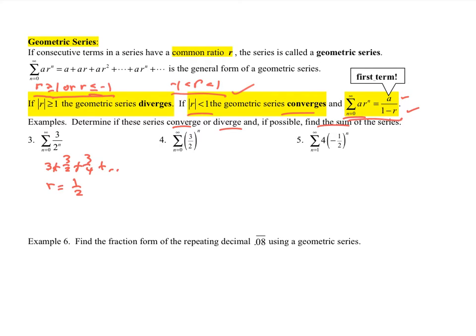And then the sum then is found by doing s sub n is equal to the first term, which we found to be 3 over 1 minus 1 half. If you multiply that out, you're going to get 6. Now a couple of things here. I don't have to put this n because we're actually doing an infinite number of terms. So as n goes to infinity, so this would just be my sum here, would be 6.